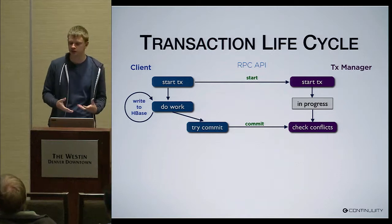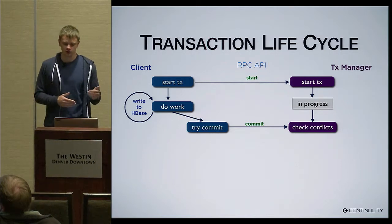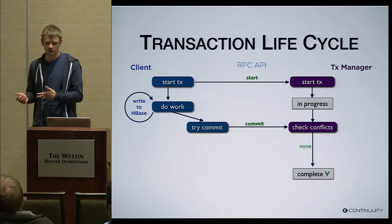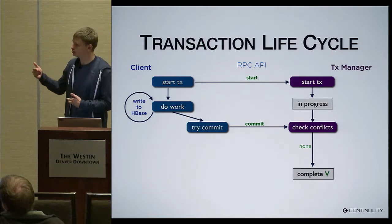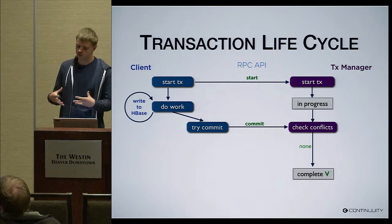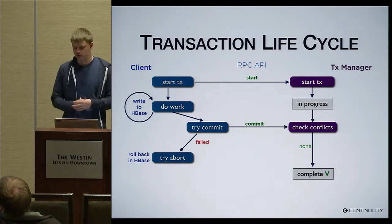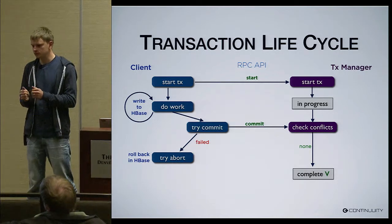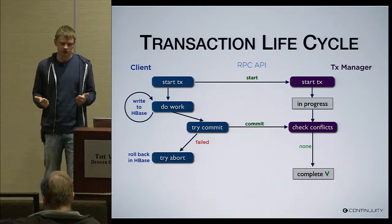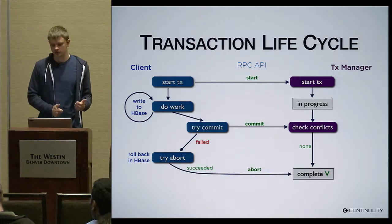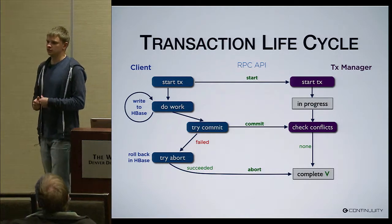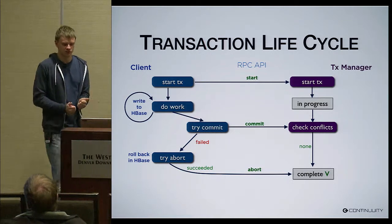If everything goes well, the transaction manager moves the transaction from the in-progress list into the complete list, after which it is visible to all other transactions started after it. If things go bad, the client tries to roll back all changes made in HBase so there's no junk left behind. If rollback succeeds, we move the transaction into the complete list again because there's no effect of this transaction in HBase left behind.